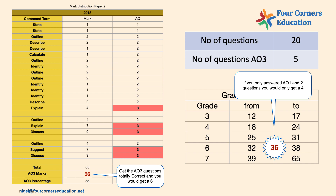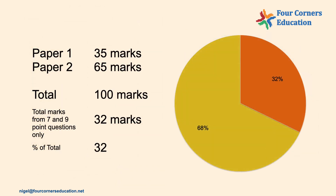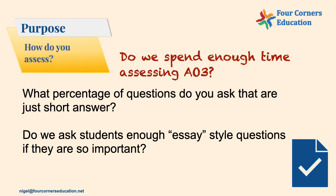Let's look at the two papers together. Paper 1 is 35 marks; Paper 2, 65 marks — total of 100 marks. The total marks coming from the 7 and 9 point questions are 32. So 32 of all marks available come from these two question types. The first thing we've got to ask ourselves in the classroom is: do we spend enough time assessing AO3? What percentage of questions we ask are just short answer? Do we ask students enough essay-style questions?